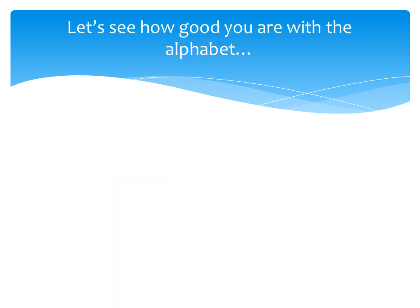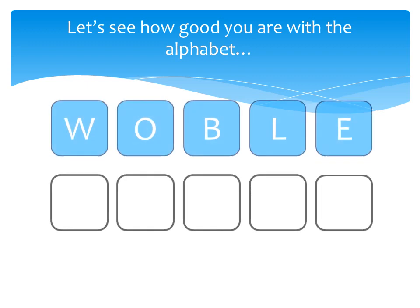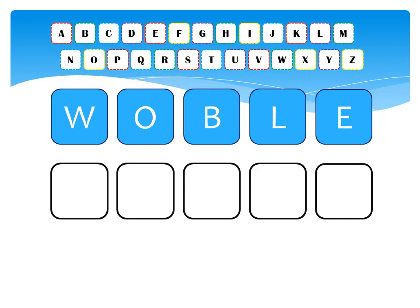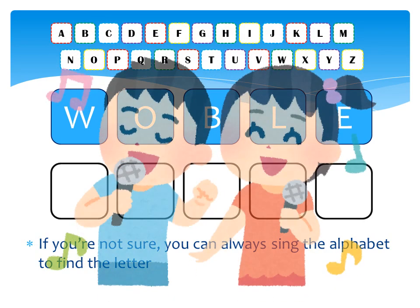Let's see how good you are with the alphabet. Let's try and play this game together. If you put the letters back into alphabetical order, it will make a word. Let's try this one. W-O-B-L-E. If you're not sure which letter is first, you can always refer back to the alphabet chart, or you can sing your ABCs.